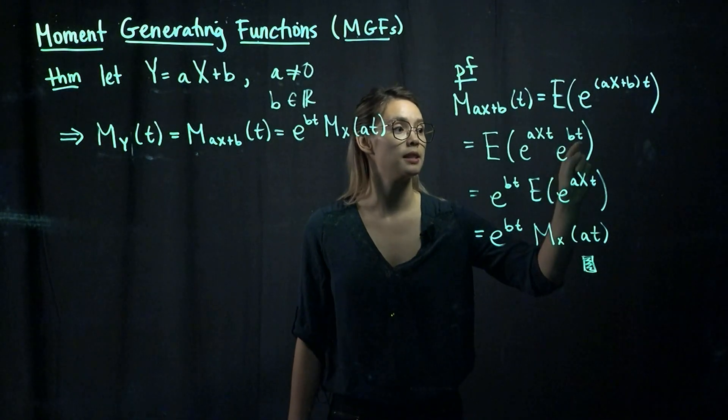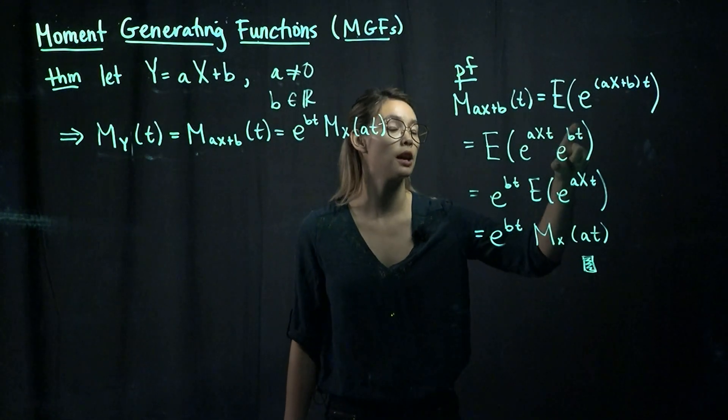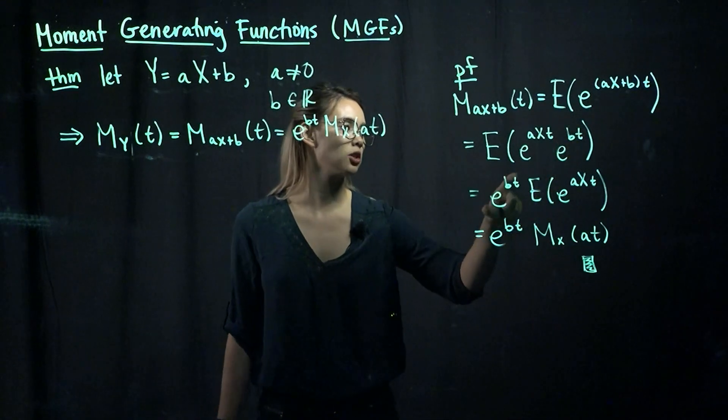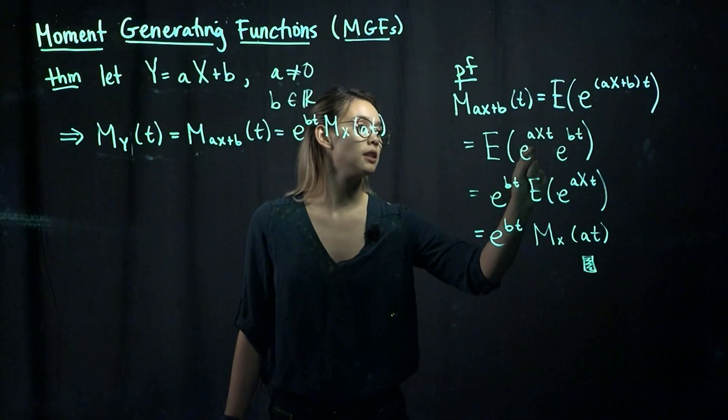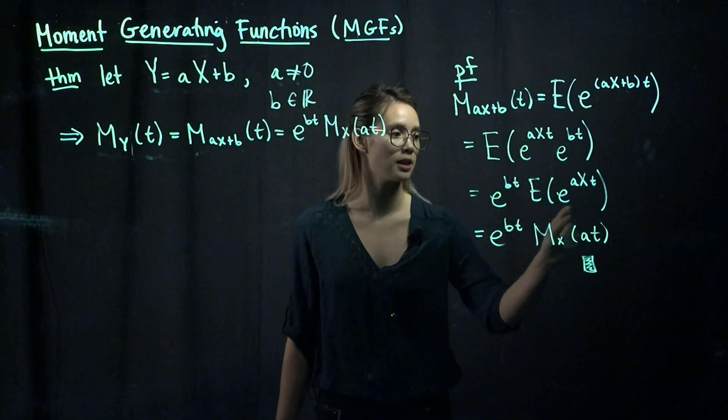Now, b and t, this term has no x's in it, so that means that we can pull it out of the expectation. This is just a constant. So we pull that out of the expectation, and we're left with, inside the expectation, just e to the a times x times t. So this is how we get to this line.